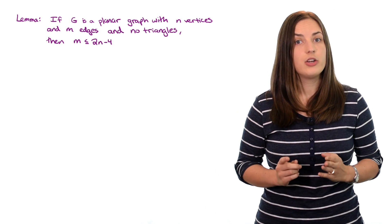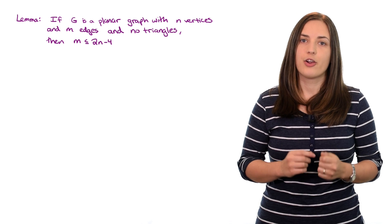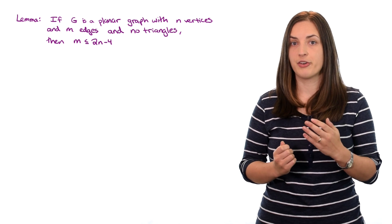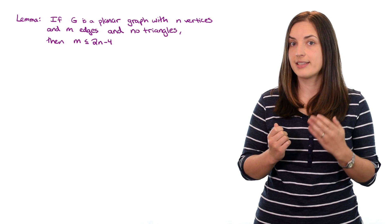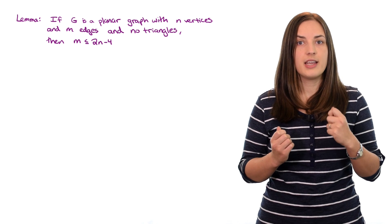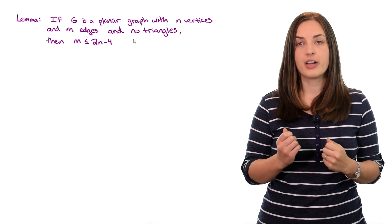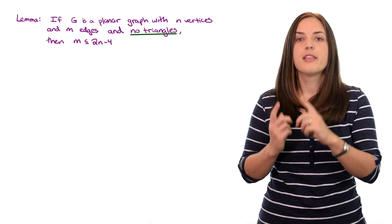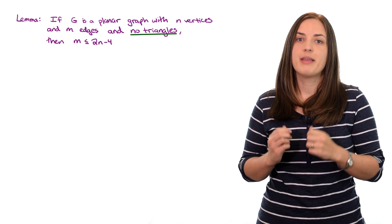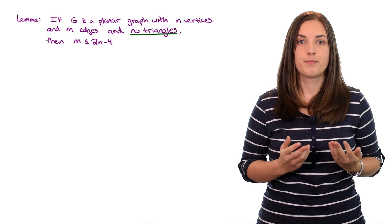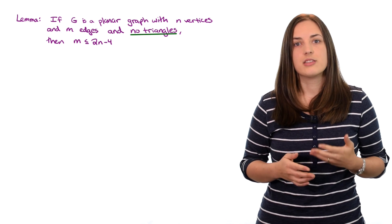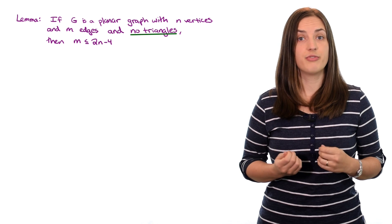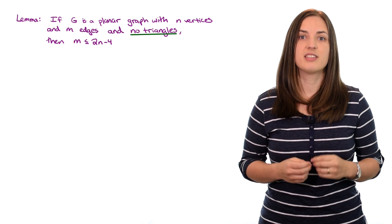We already know that if a graph is planar then the number of edges is bounded by three times n minus six, but we're saying that if we add the additional constraint that the graph has no triangles, then the number of edges can be at most 2n minus four. The proof is going to be very similar to the proof from the previous video.